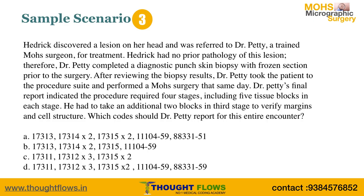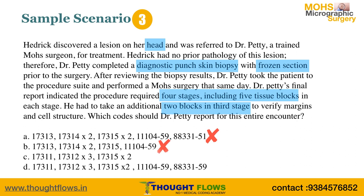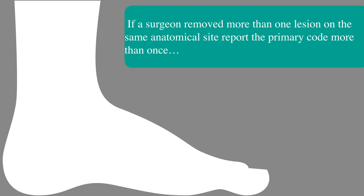Here is an example: the patient presents with a lesion on the head. With no prior pathology, the doctor performs a punch biopsy with frozen section, the report comes back positive for cancer, and the doctor then performs Mohs surgery in four stages with five tissue blocks in each, with two extra blocks taken in the third stage. We can eliminate answers A and B since the location is head. The codes are 17311 for the first stage, 17312 times three for three extra stages, 17315 times two for two extra blocks in the third stage, plus code 11104 for the punch biopsy and 88331 for frozen section, both with modifier 59. The answer is D.